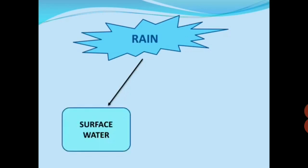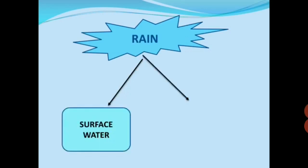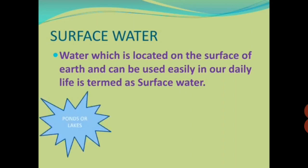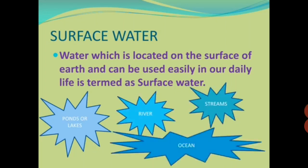You all know that rain is the main source of water. When rain water falls on the ground, it can be collected as surface water on the surface of the earth, or it is absorbed by the earth and then that is called underground water. Surface water is water which is located on the surface of the earth and can be used easily in our daily life. For example, water in ponds or lakes, rivers, streams, or oceans — all these are sources of surface water.